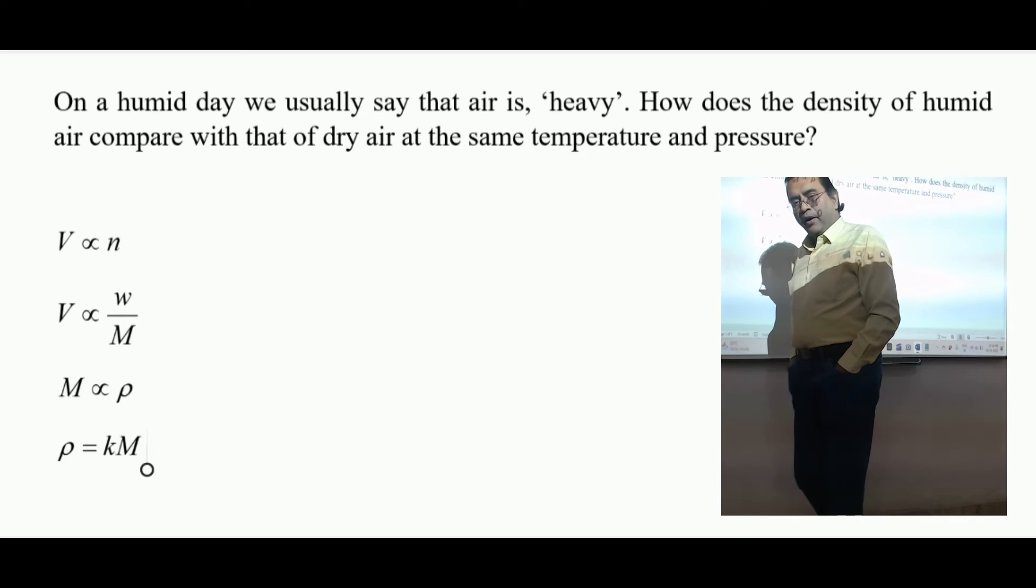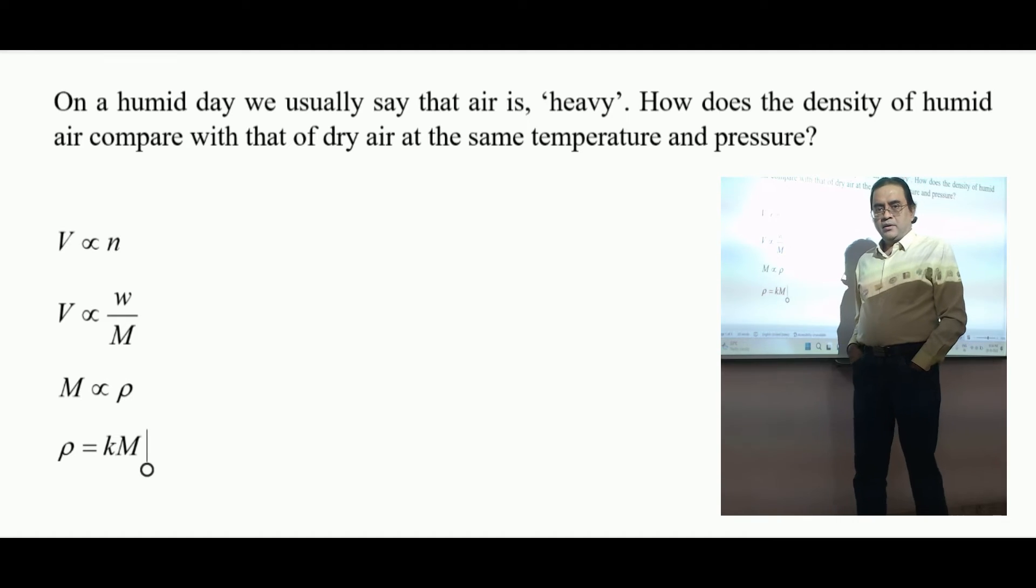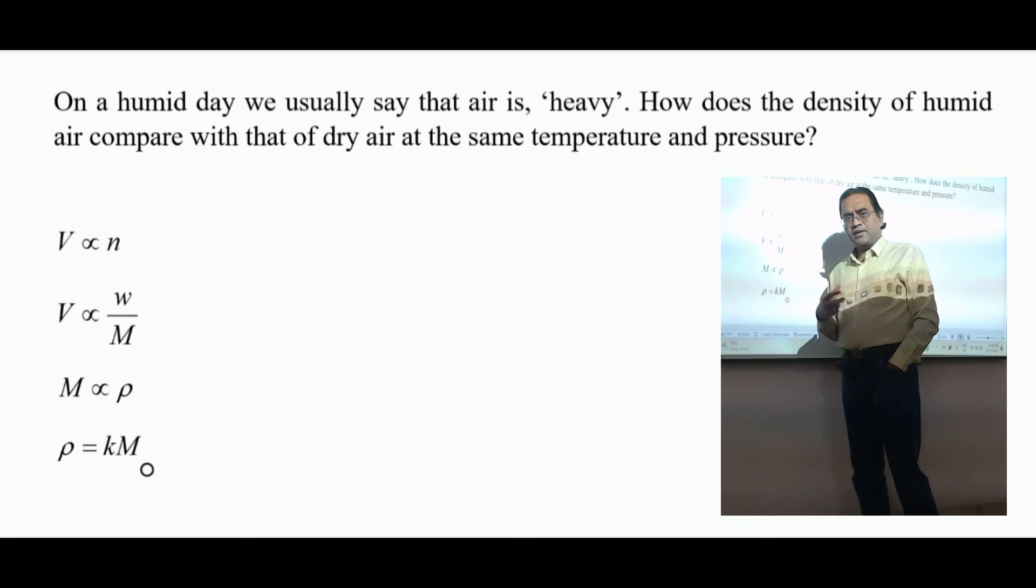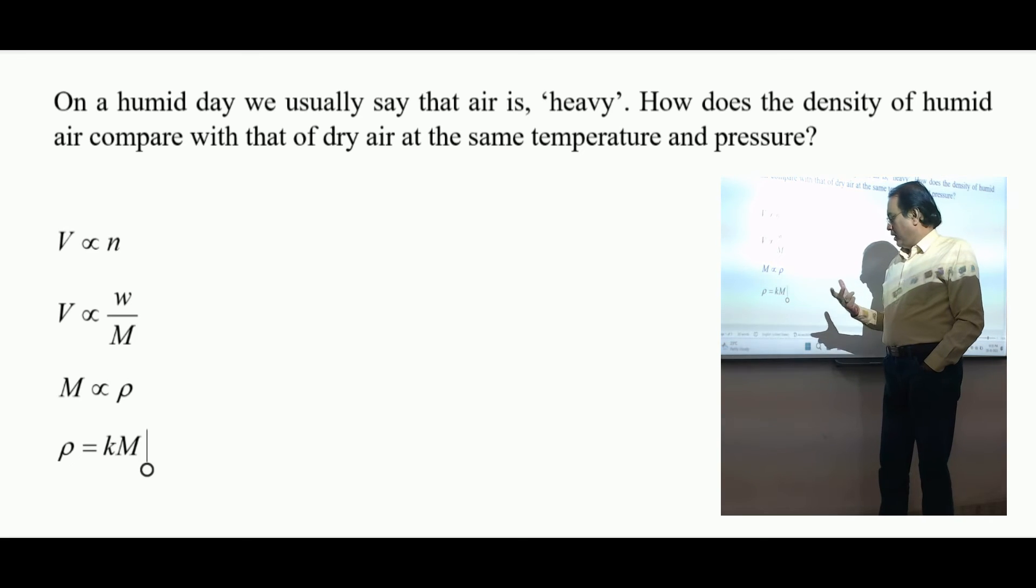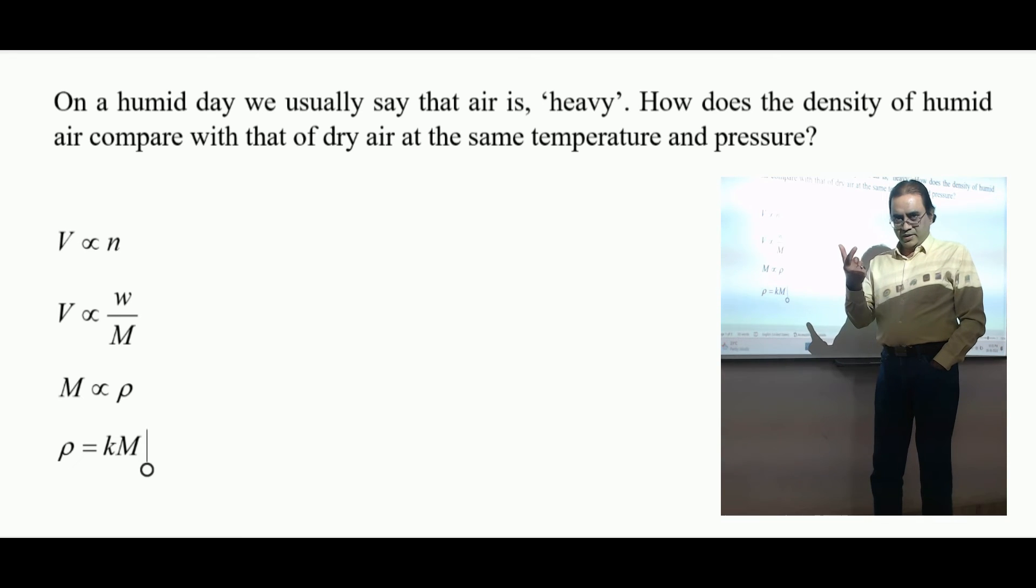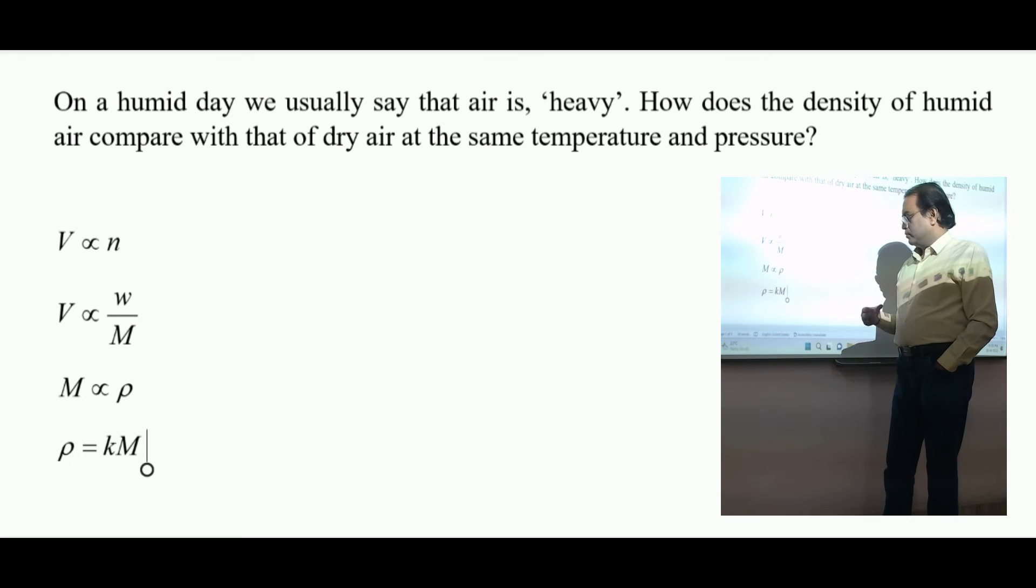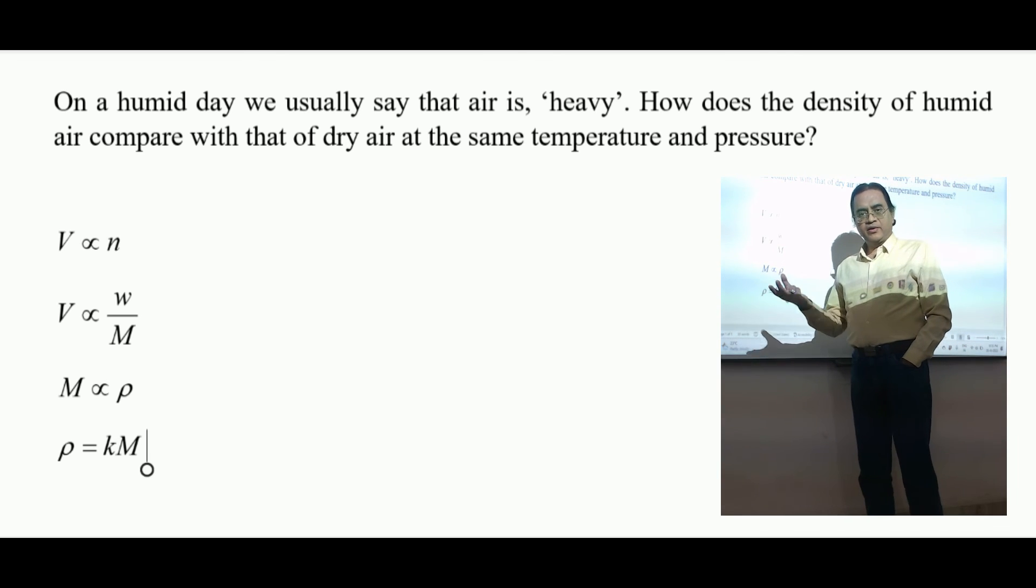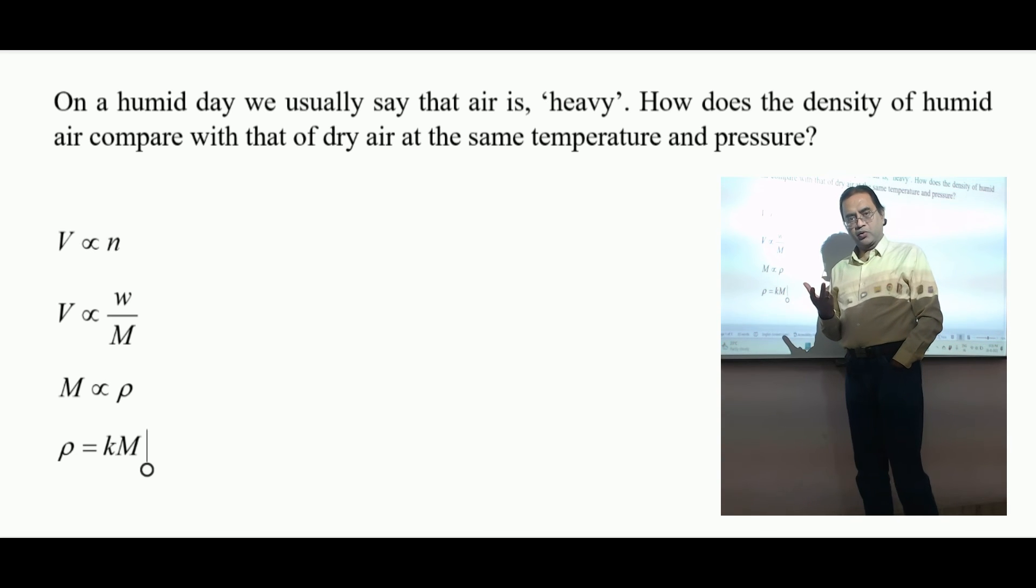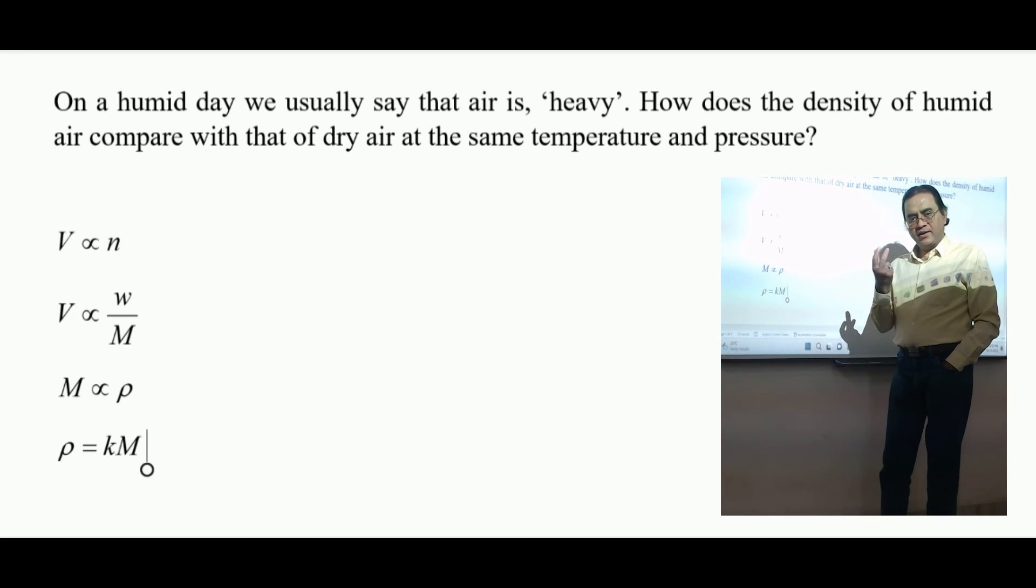Now when we look at the composition of air, we have nitrogen 28, oxygen 32. If we look at water vapor or water as vapor, H2O, then the molecular mass is 18. So nitrogen 28, oxygen 32, these are heavy molecules; H2O 18 is light.